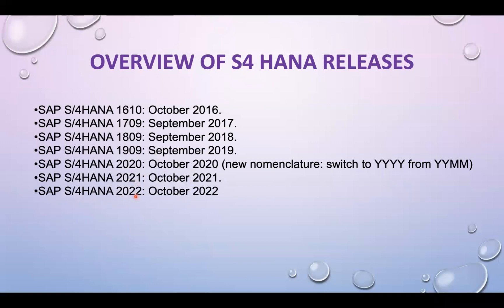In ECC we had enhancement packages, right — EHP. In a similar way, every year SAP is going to release on-premise latest editions, because R&D keeps happening in the back end. Any new functionalities they add will be released in the respective year. So I hope you can understand the difference between earlier versions with month-and-year naming and the new year-only naming.